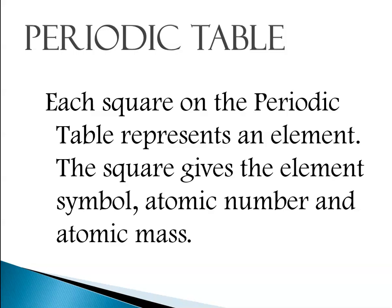In addition to the basics, the periodic table I hand out may give you the electron configuration, density, specific heat capacity, and a whole bunch of different constants. But in general, each square on a periodic table will give you as a minimum the name of the element, the symbol for the element, its atomic number, and its atomic mass.